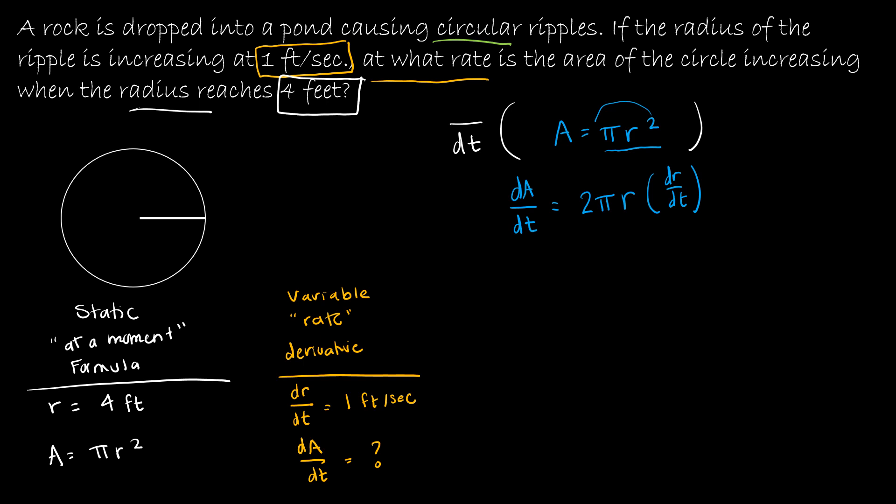Now what I'm going to do is replace what I can replace. dA over dt, that's the one I'm trying to solve for. So I'm going to leave that dA over dt. This is 2, this is π, r is 4 feet.